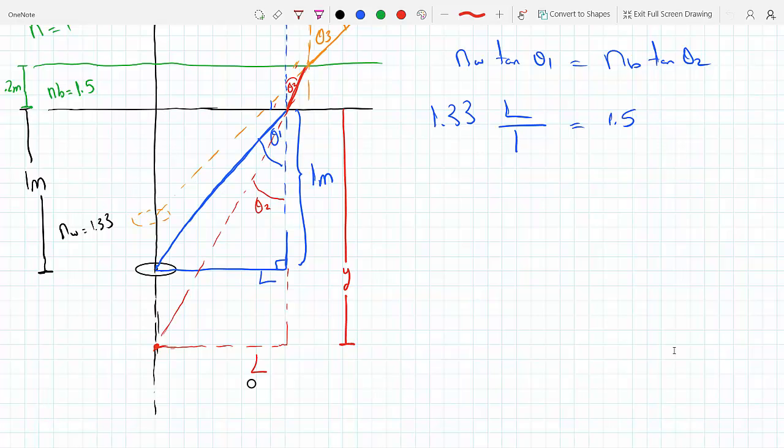We're going to call this Y so we can use that same triangle, the red triangle extending from theta2. The tangent of theta2 in that triangle would be L over Y. These two triangles have the same base, so my L can cancel out and I can find Y to be 1.5 over 1.33. Putting this on the calculator, 1.12782. So that's from the interface of the benzene water down to where the ray originates.